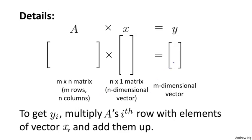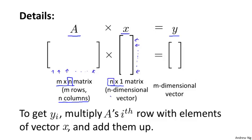Here are the details of how to multiply a matrix by a vector. Let's say I have a matrix A, and I want to multiply that by a vector x. The result is going to be some vector y. The matrix A here is an m by n dimensional matrix — m rows and n columns. I'm going to multiply that by an n by 1 matrix, or in other words, by an n-dimensional vector. The n here has to match: the number of columns in this matrix has to match the number of rows in the vector. The result of this product is going to be an m-dimensional vector y, where m equals the number of rows in matrix A.